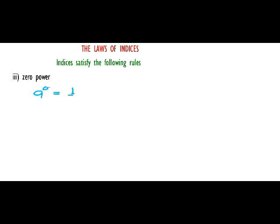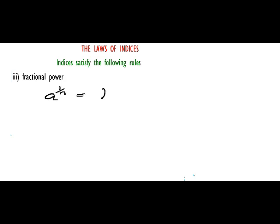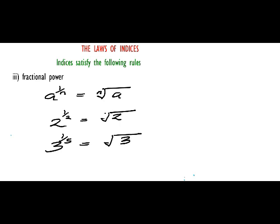Rule 3 — the zero power: any number raised to power zero is 1, whether the number is known or unknown. For example, a raised to power zero is 1, and 2 raised to power zero is 1. Rule 4 — fractional powers: a raised to power 1 over n is the nth root of a. For instance, 2 raised to power one-half is simply the square root of 2, and 3 raised to power 1 over 5 is the fifth root of 3.